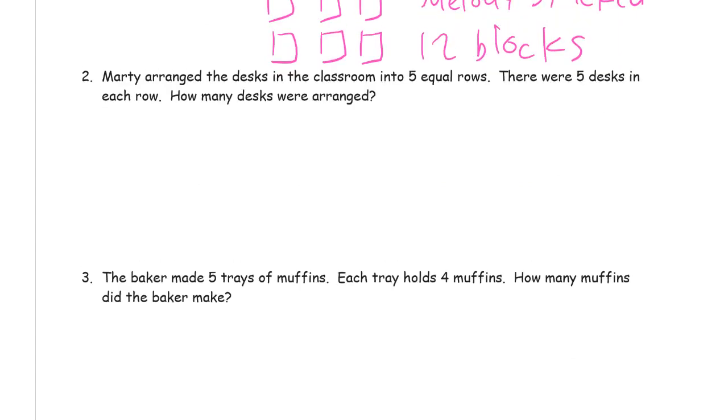Marty arranged the desks in the classroom into five equal rows. There were five desks in each row. How many desks were arranged? So I'm going to draw squares again. Five equal rows. Five in each row. So that's five rows of five. Let's use my other strategy and just draw one row of five and then just make it so that I have five of those rows.